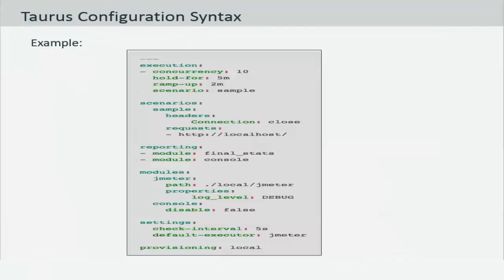Here is an example of the Taurus configuration that has almost all the top-level keys that we spoke about. So we've got the execution settings which has a list of elements inside it like concurrency set to 10, hold for, ramp up, and scenario set to sample, for example. This is followed up with the actual scenario section where the sample is further described — your sample scenario has headers and has request information for the request URL.